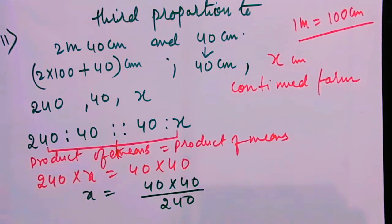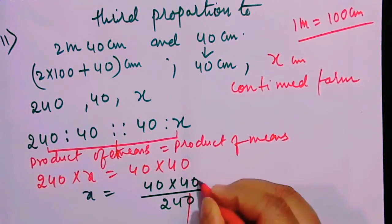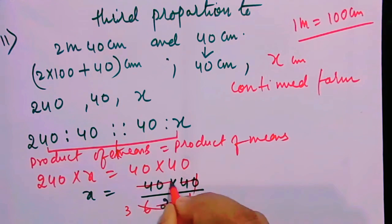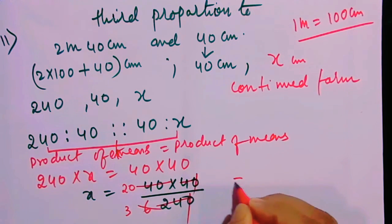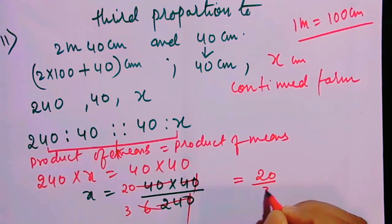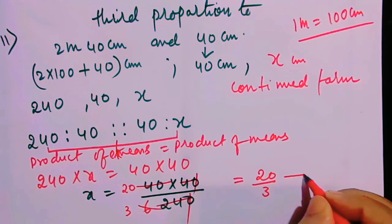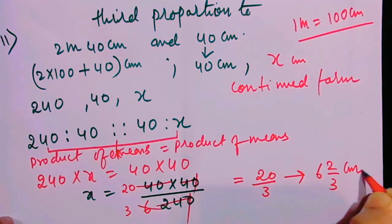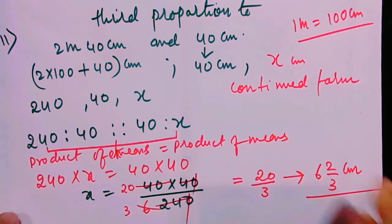See how beautifully it cancels: 4 six times, then 2 three times, and 2 gives 20. So I will write 20 by 3, or you can write 6 and 2 by 3. Your answer is in centimeter, because you had taken x in centimeter.